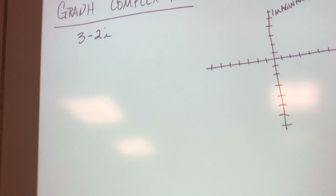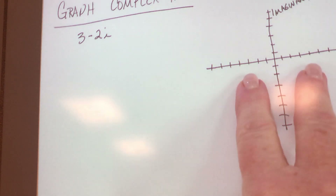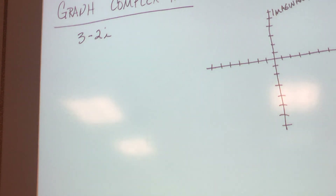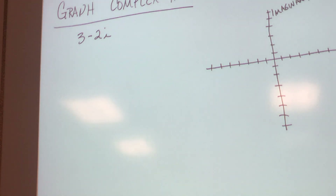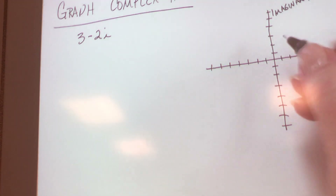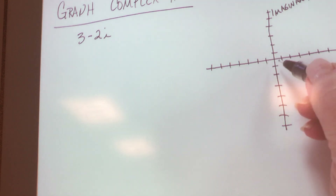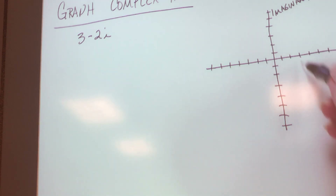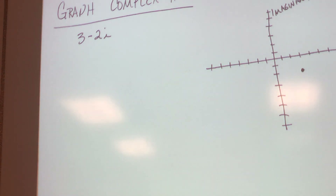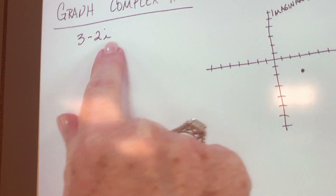So I'm going to plot this point. I'm starting at the origin. The real part is 3, so I go to the right three. The imaginary part is negative 2i, so I go down two. That's the point for 3 minus 2i. It's logical — it's exactly what you think it would be: real part, then imaginary part.